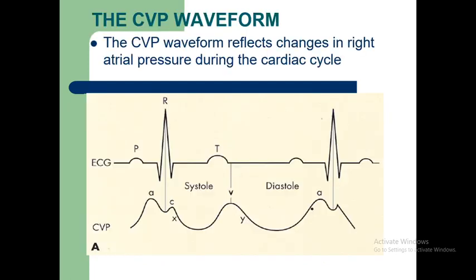The central venous pressure waveform reflects changes in right atrial pressure during the cardiac cycle. During diastole, the pressure lowers, then increases again, then decreases — this cyclic pattern is displayed on the monitor.